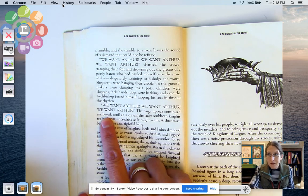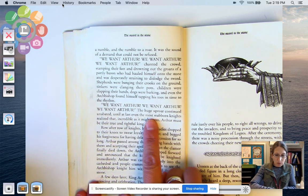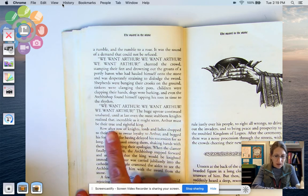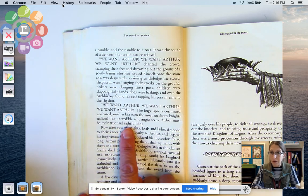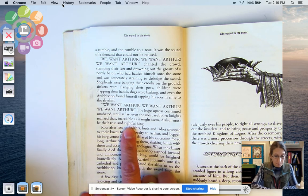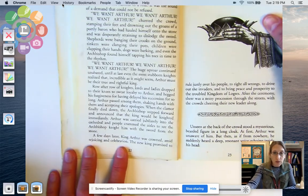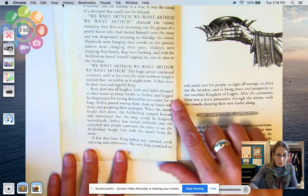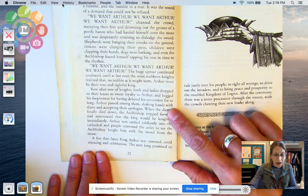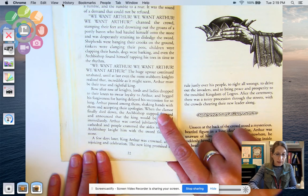Until at last, even the most stubborn knights realized that, incredible as it might seem, Arthur must be their true and rightful king. People were like, it must be true. It's kind of crazy, but he must be our new king. Row after row of knights, lords, and ladies dropped to their knees to swear loyalty to Arthur and begged his forgiveness for having delayed his succession for so long. Arthur passed among them, shaking hands with them and accepting their apologies. When the clamor finally died down, the archbishop stepped forward to announce that the king would be knighted immediately.